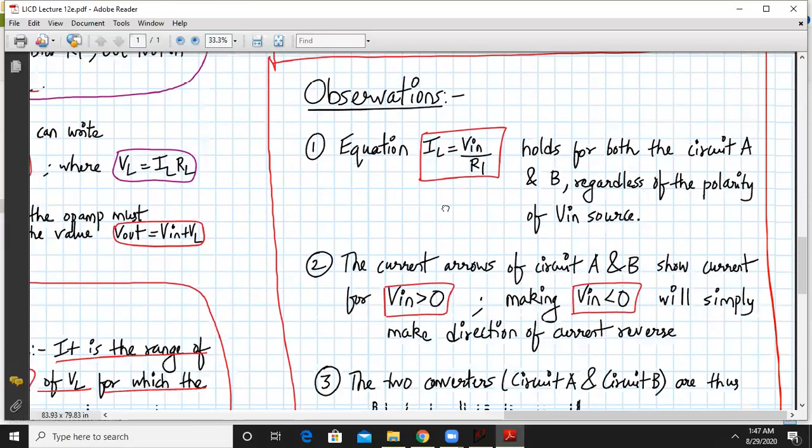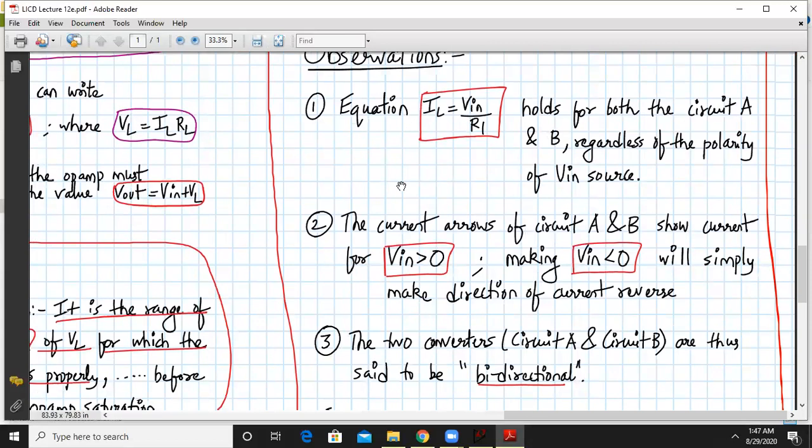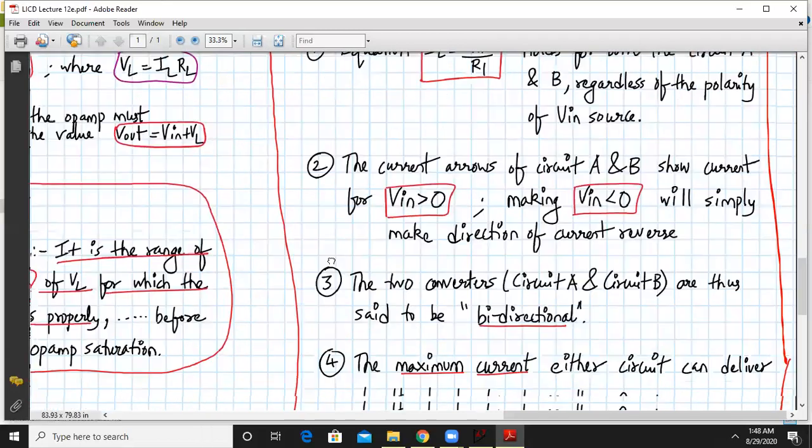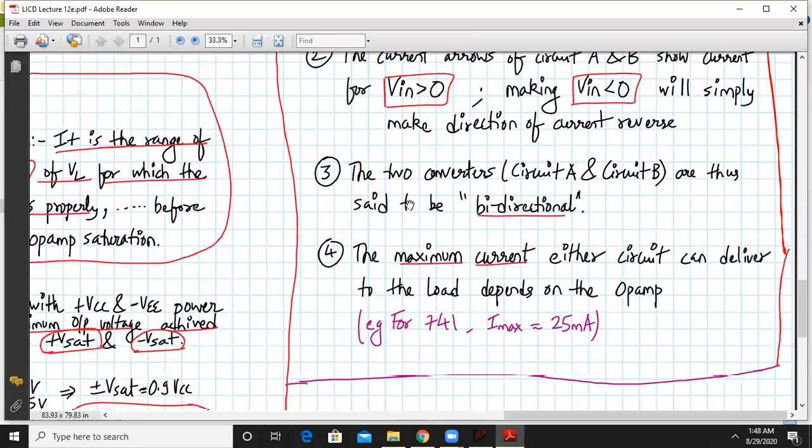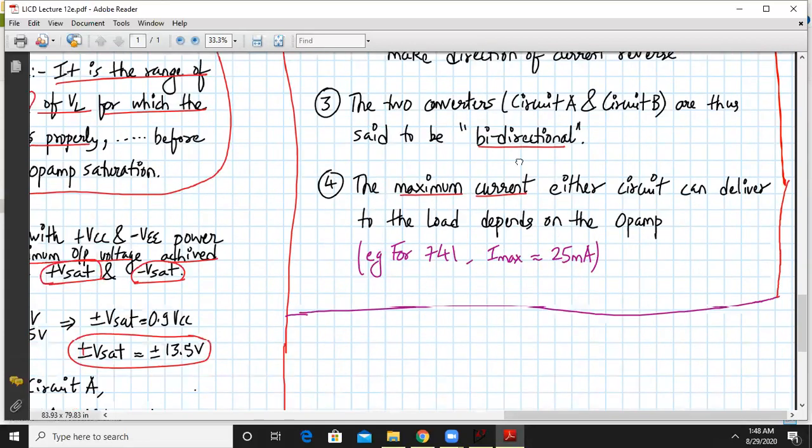We have discussed circuit A and B. What are the observations? The equation IL equals VIN upon R1 holds true for both circuits regardless of the polarity of VIN. The current arrows show current for VIN greater than zero, and making VIN less than zero will simply reverse the direction. The two converters are thus said to be bidirectional. Maximum current either circuit can deliver to the load is around 25mA for 741 op-amp.